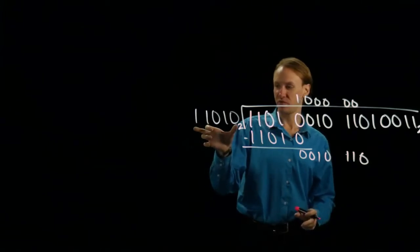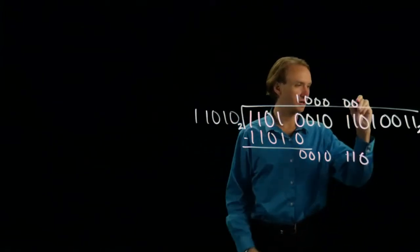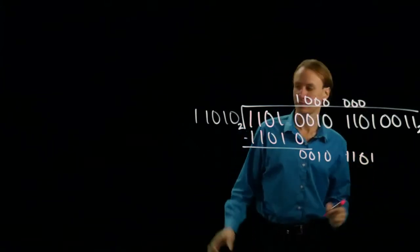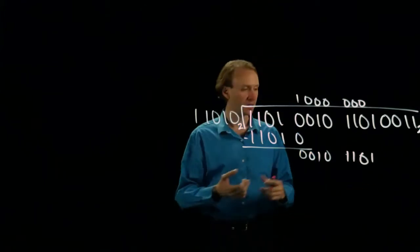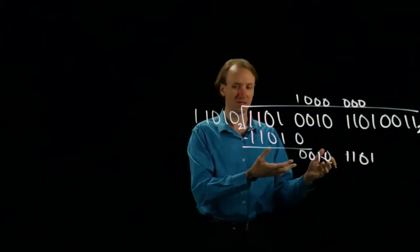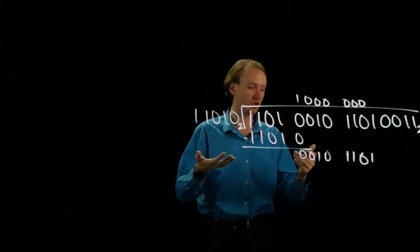So this five-bit binary number is still larger than this one, so I need to bring down at least one more bit. Now I have a five-bit binary number and a six-bit binary number. The six-bit binary number is obviously larger than the five-bit binary number, so now I can do the subtraction again.